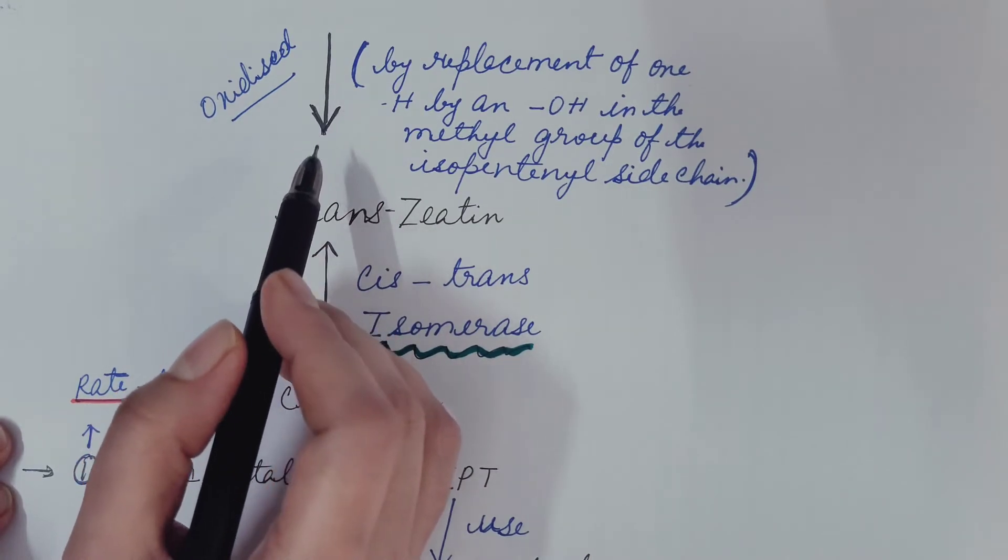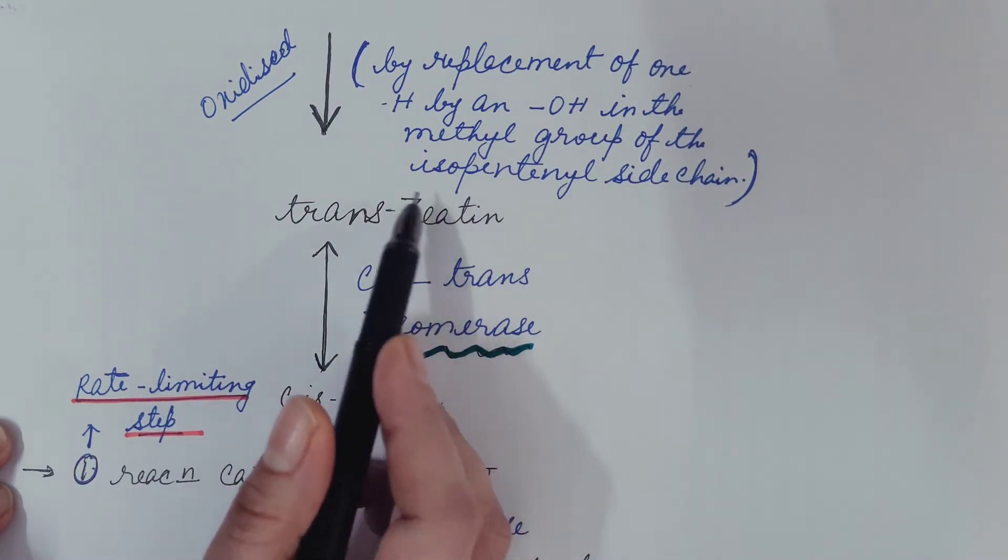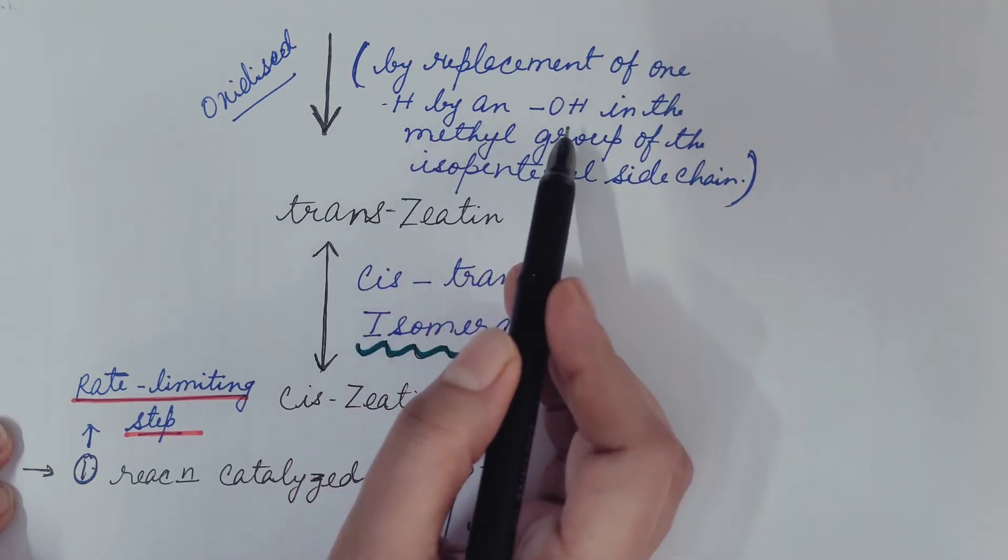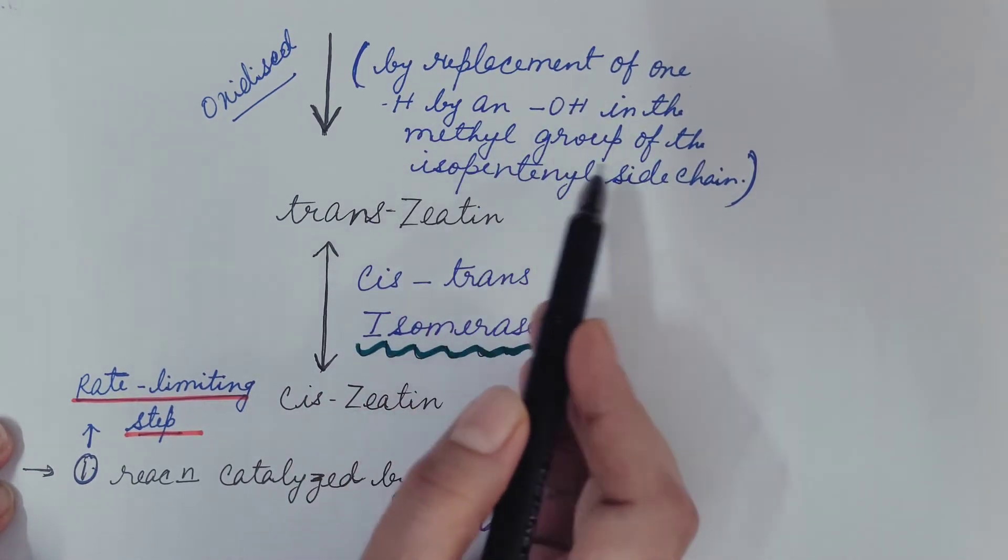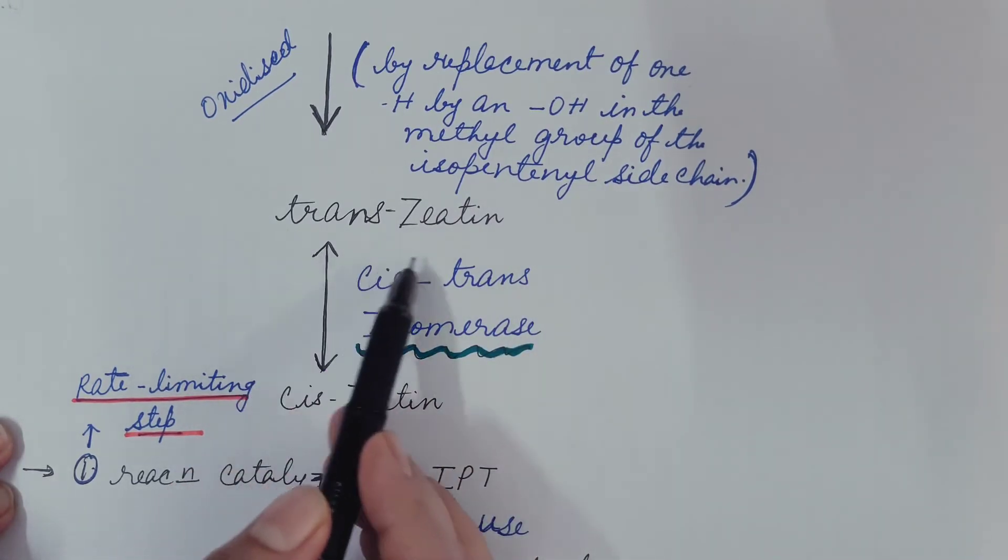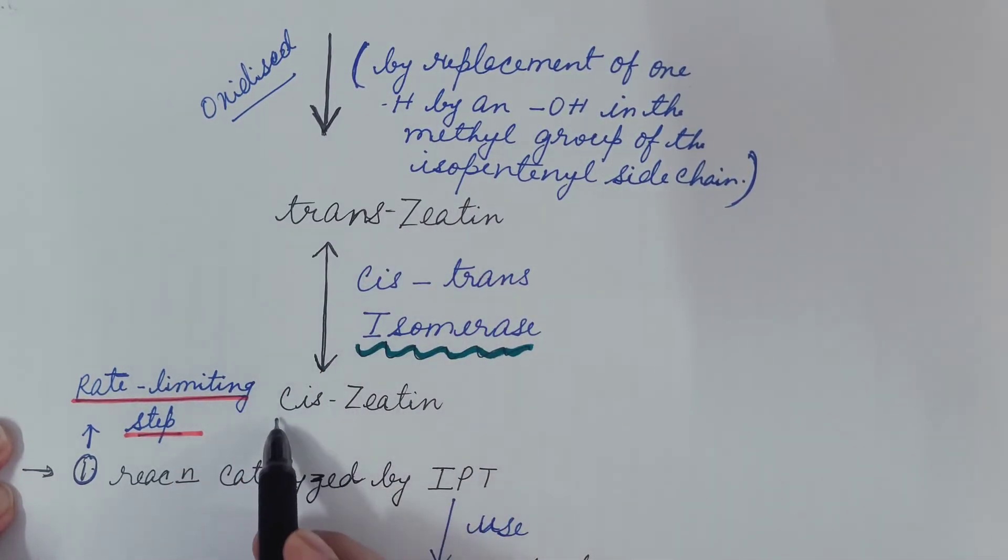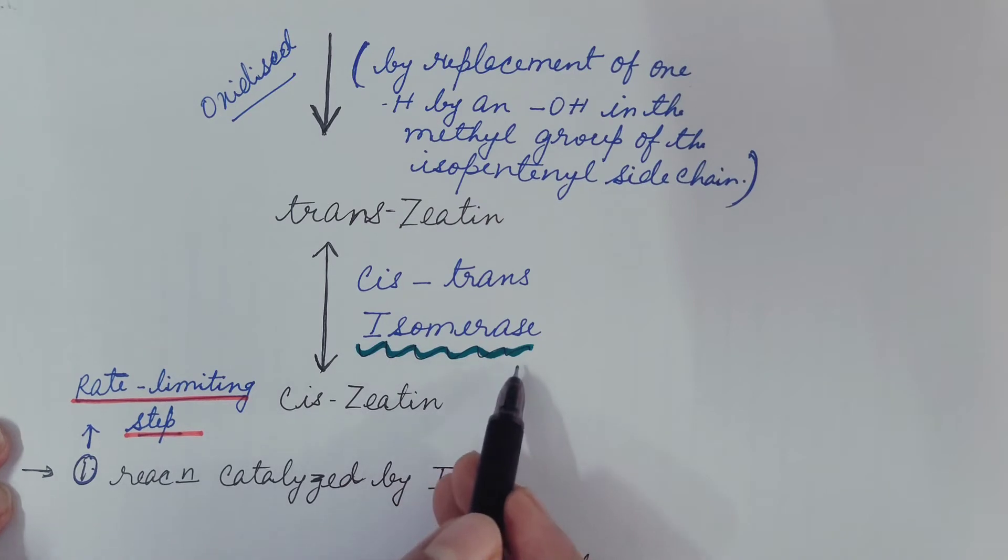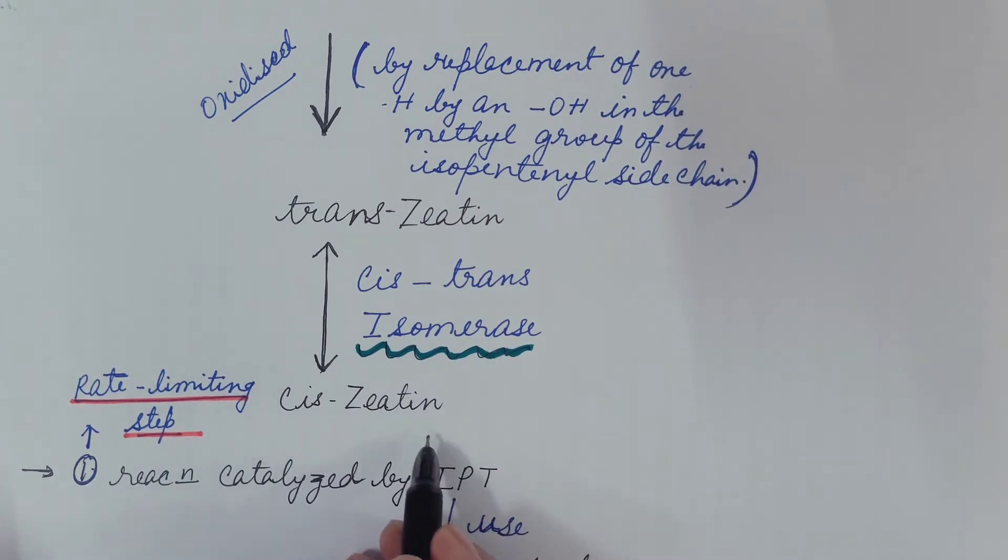Isopentanyl adenosine is then oxidized to trans-zeatin by replacement of one hydrogen atom by a hydroxyl group in the methyl group of the isopentanyl side chain. This trans-zeatin is then isomerized into cis-zeatin. This step is catalyzed by cis-trans isomerase. In this way cytokinin is synthesized.